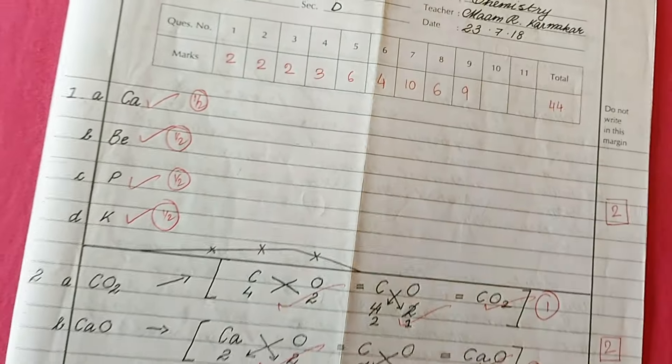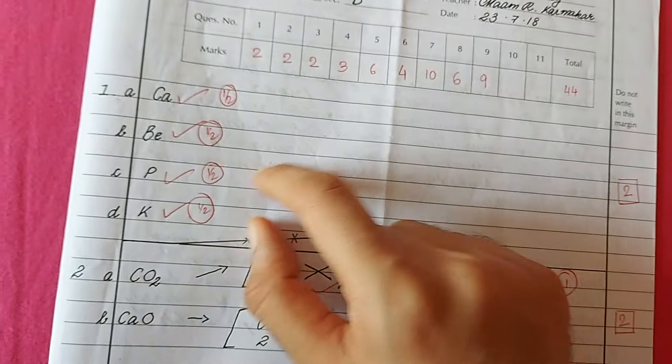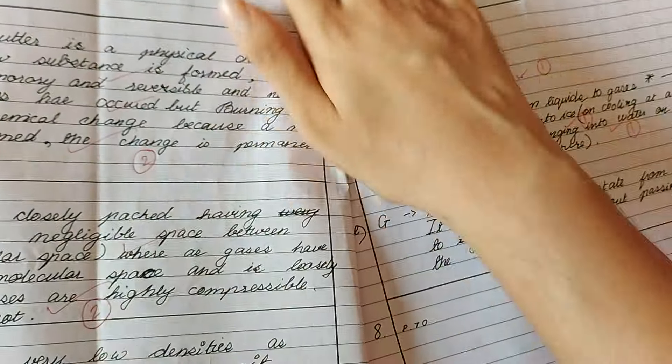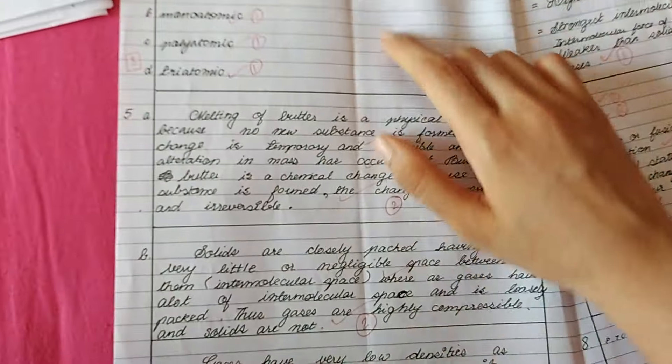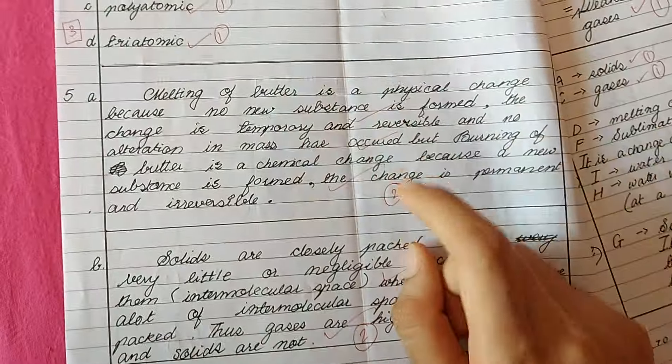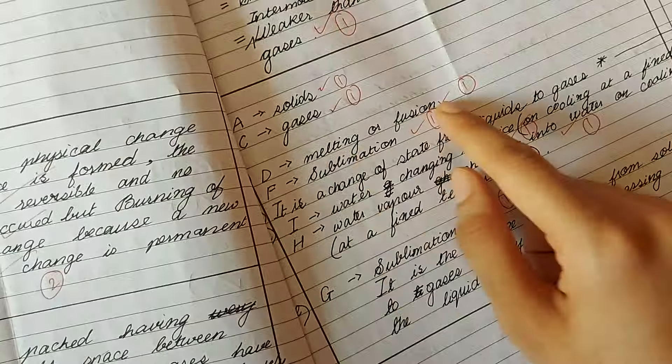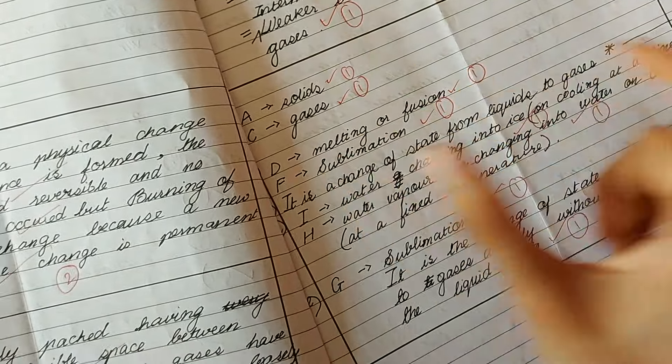For chemistry I got 44 out of 50. There was a line given and we had to write the appropriate element. Paper seems pretty neat. Everything explained properly. If there is a 2-mark answer, the answer length should be big, and if there is a 1-mark answer, then the answer length should be small because the teachers also don't have that much time.